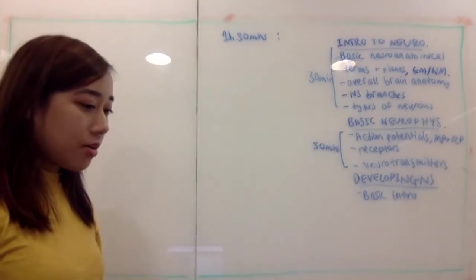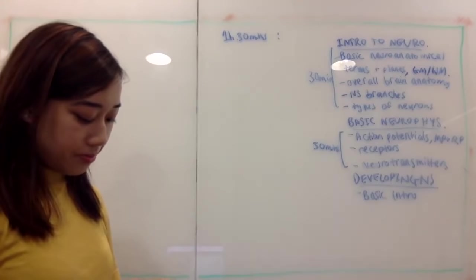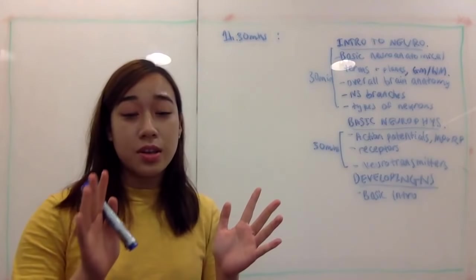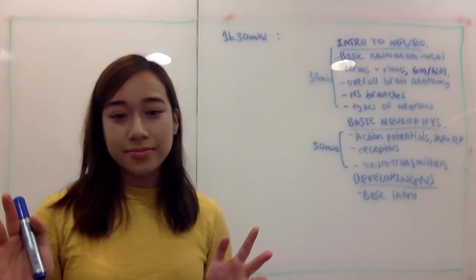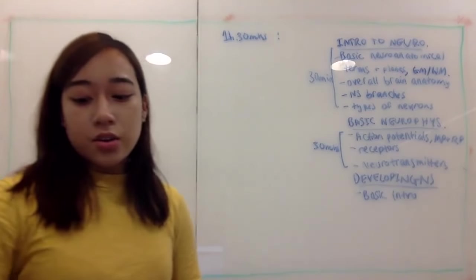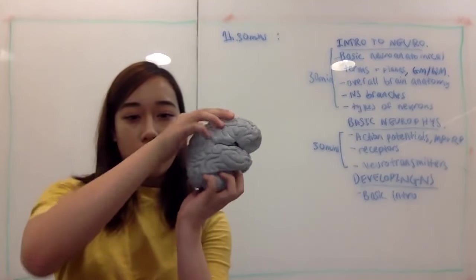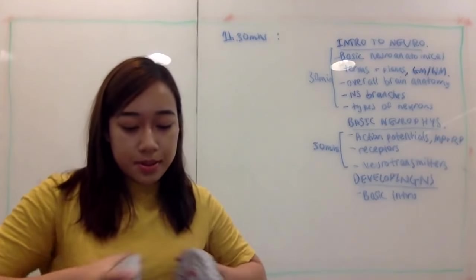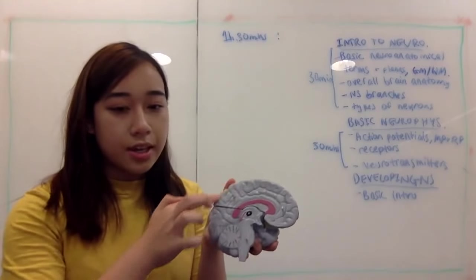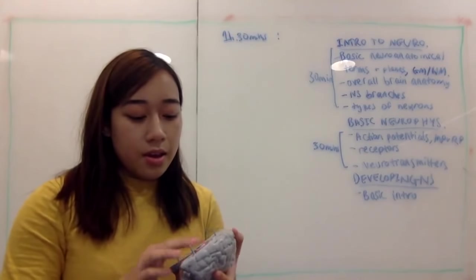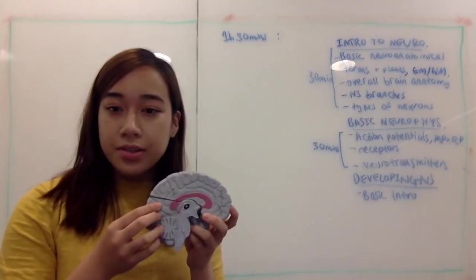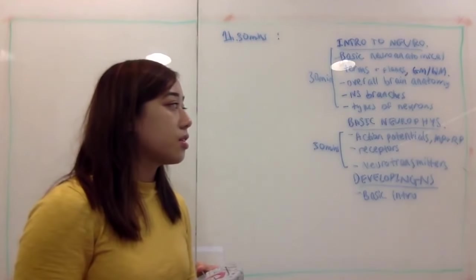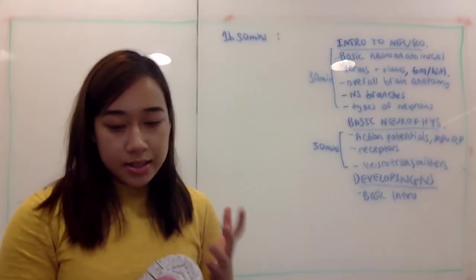A really important basic neuroanatomy concept is the difference between the cerebrum and the cortex. The cerebrum is the entire main mass of the brain. Your cortex, if you split the brain open, is just the outer layer — also known as gray matter. The inside layer, as you probably know, is white matter.